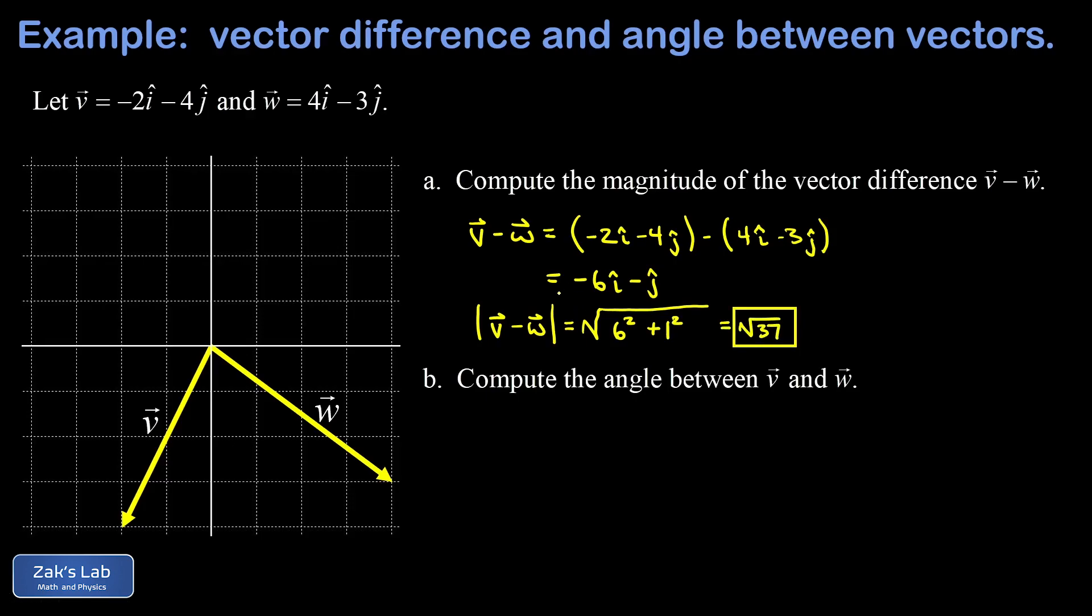Now I want to talk about the interpretation of the vector difference. You may recall that if the tails of two vectors are placed in the same location, the vector difference points from the head of one vector to the head of the other. So v - w is actually a vector pointing from the head of w to the head of v.